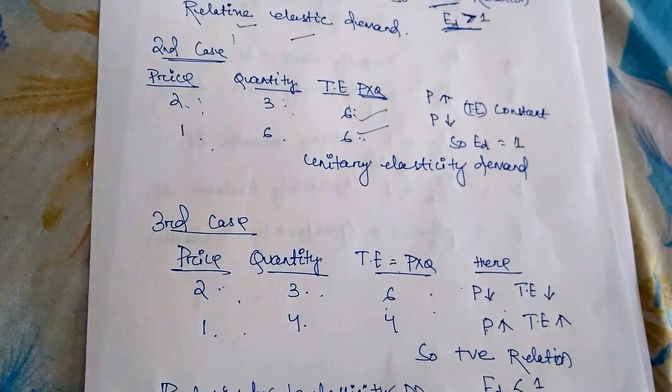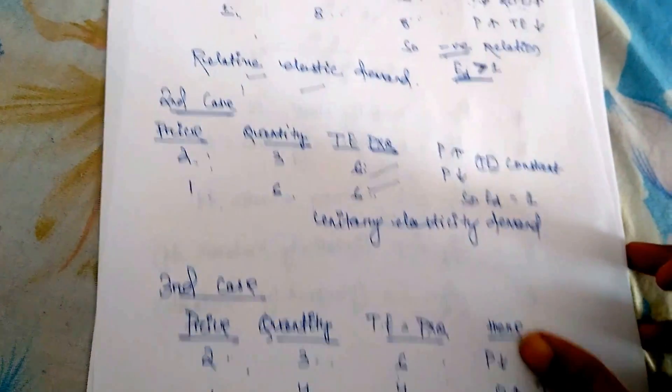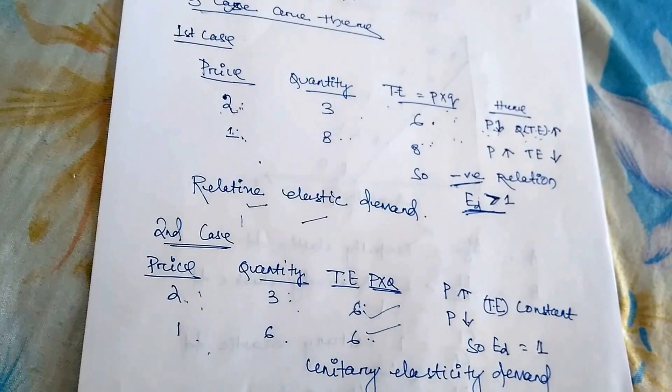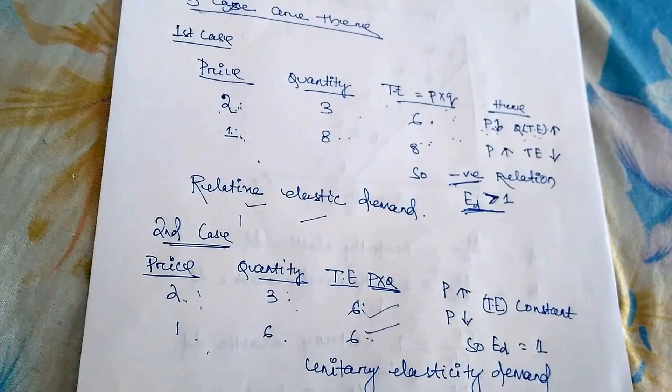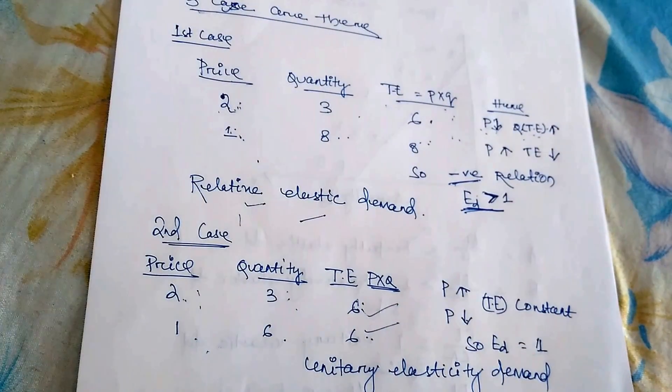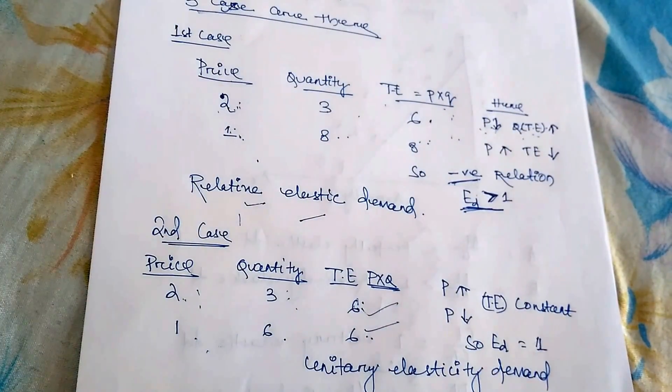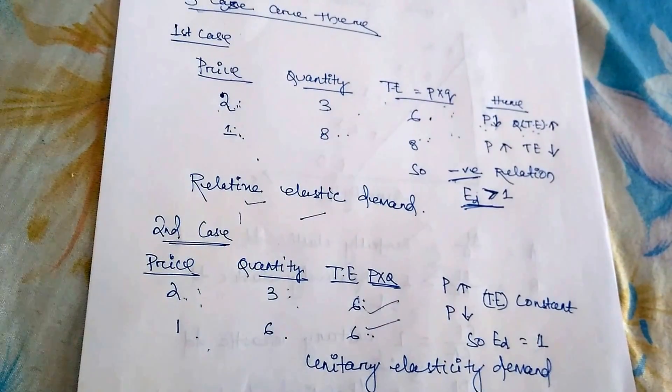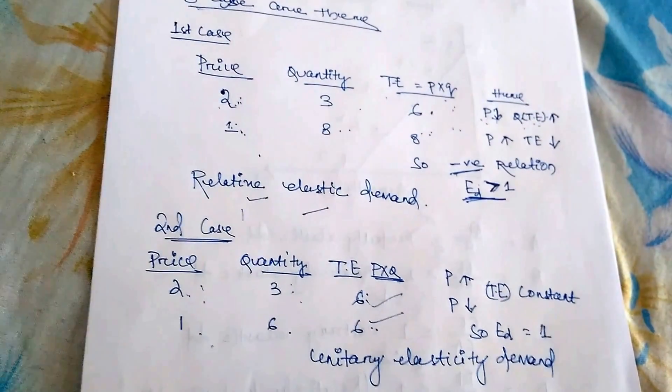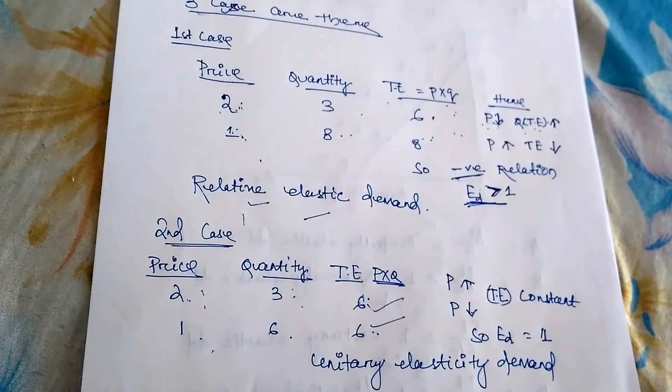In the next class, we will discuss the remaining two types of elasticity of demand: income elasticity of demand and cross price elasticity of demand.